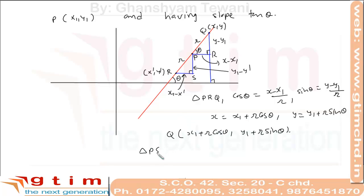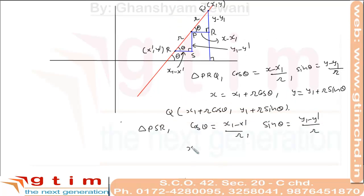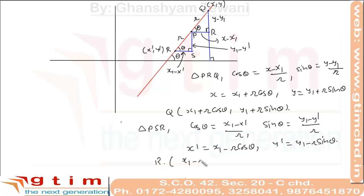Now in triangle PSR, the value of cos(theta) = (x1 - x') / r and the value of sin(theta) = (y1 - y') / r. From this we get x' = x1 - r·cos(theta) and y' = y1 - r·sin(theta).